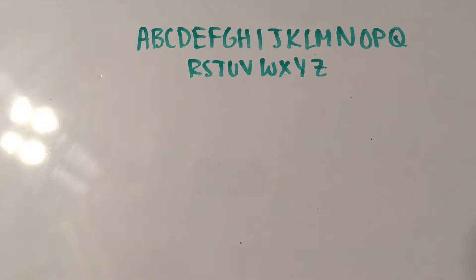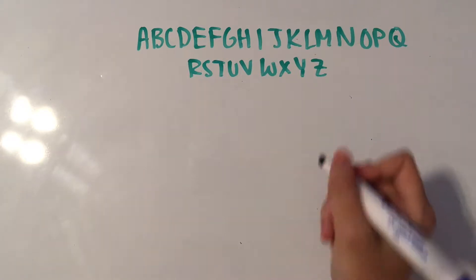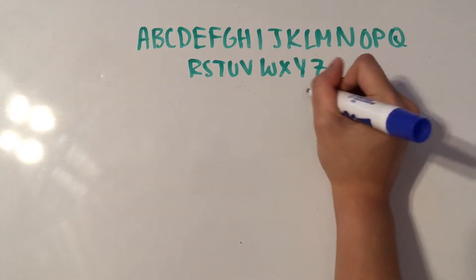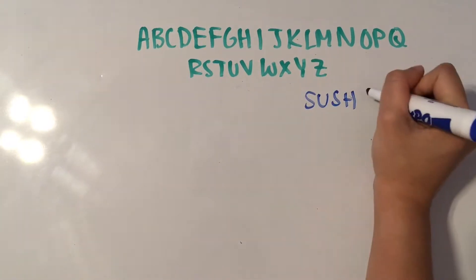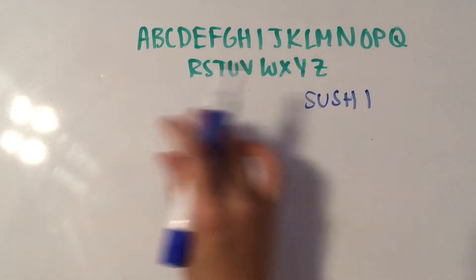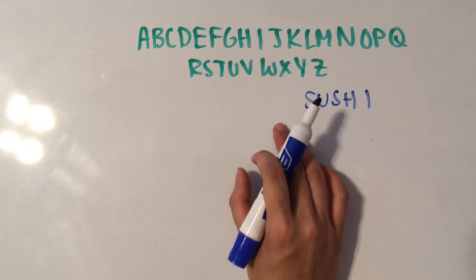So what I want to do for today is show you how to make a really simple binary search tree. And we'll do that for the word sushi. So I'll just write it to the side here. And I have the alphabet here, and you'll see why this comes in handy later.